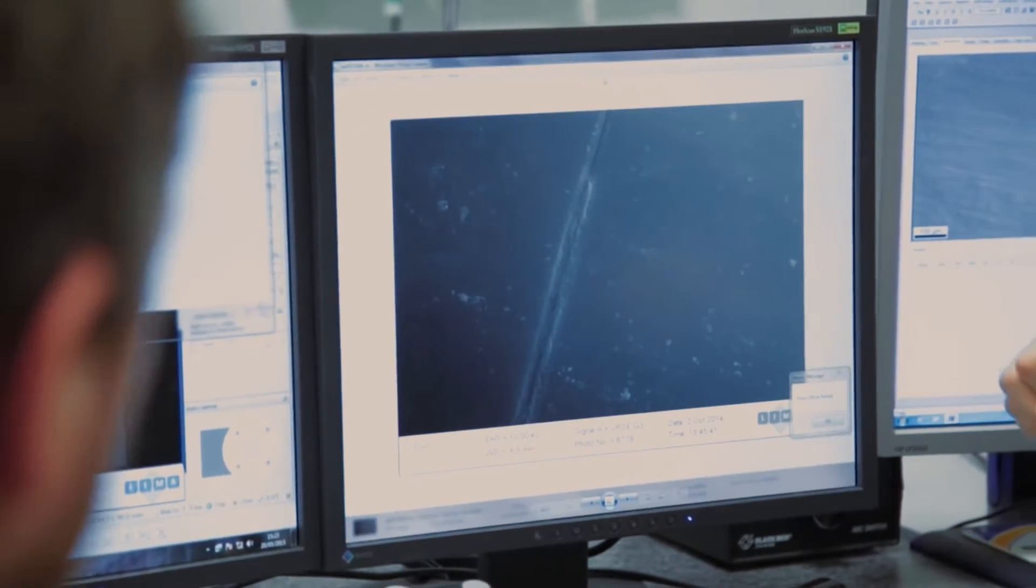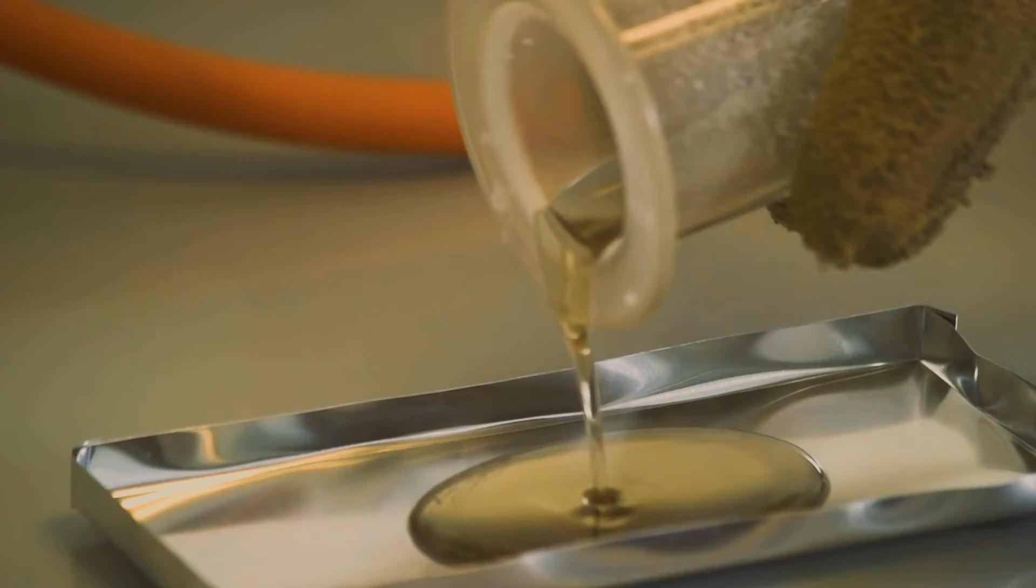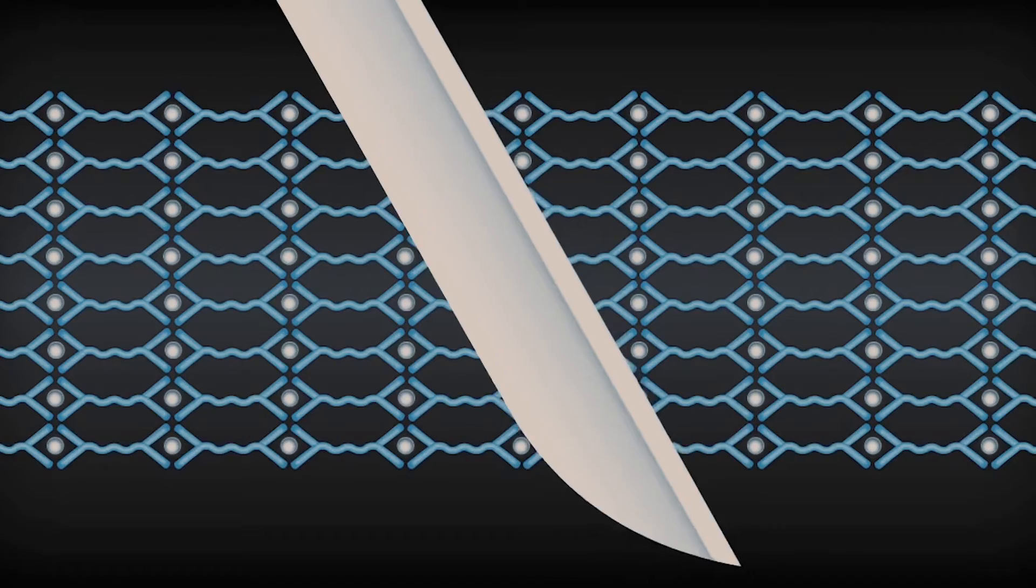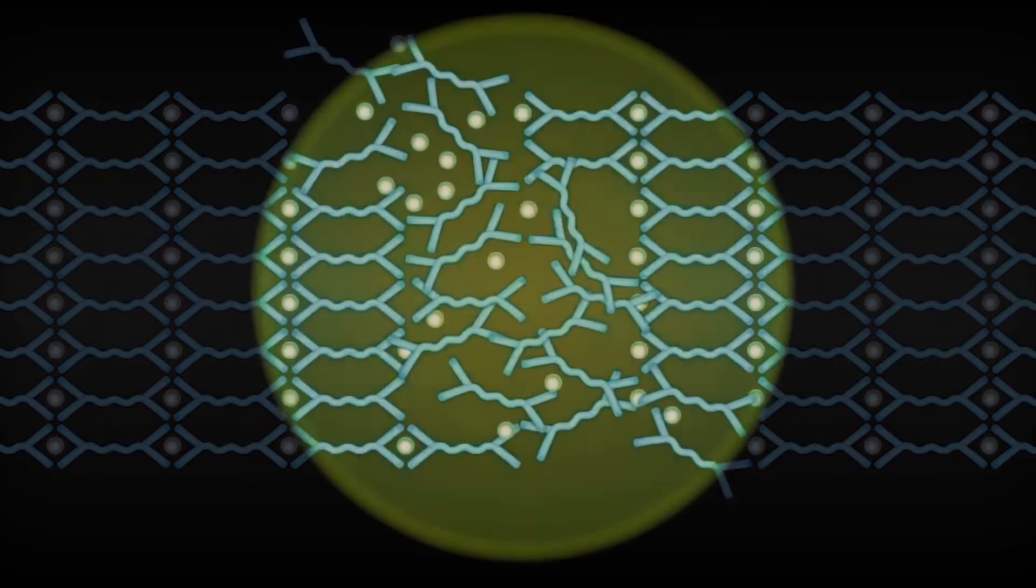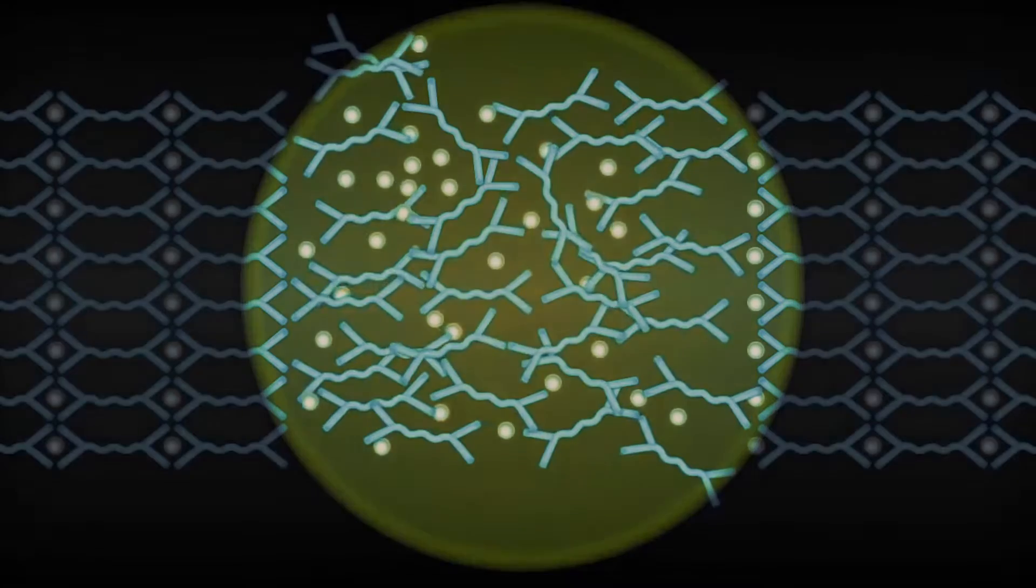The new material, a supramolecular polyurethane, flows like a liquid when cut or scraped, filling in the damage in a couple of hours before its molecules bind together to become solid again.